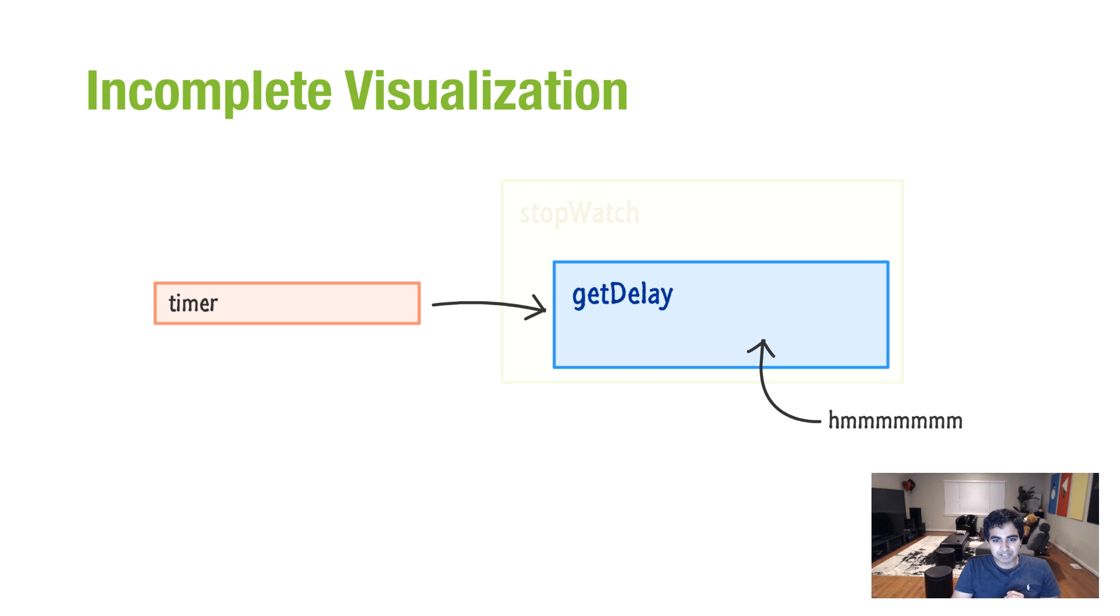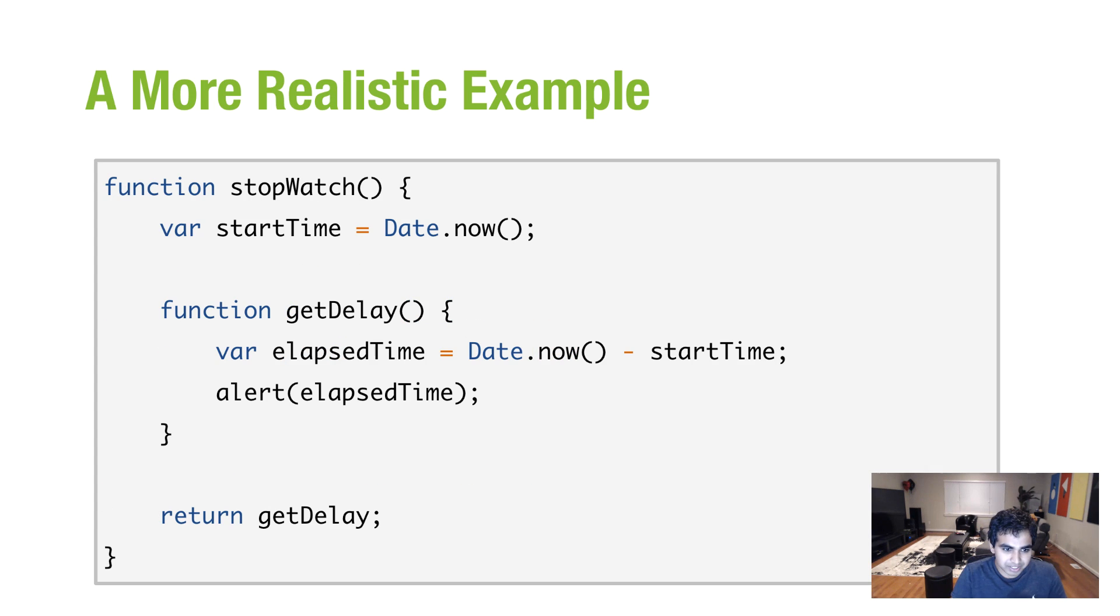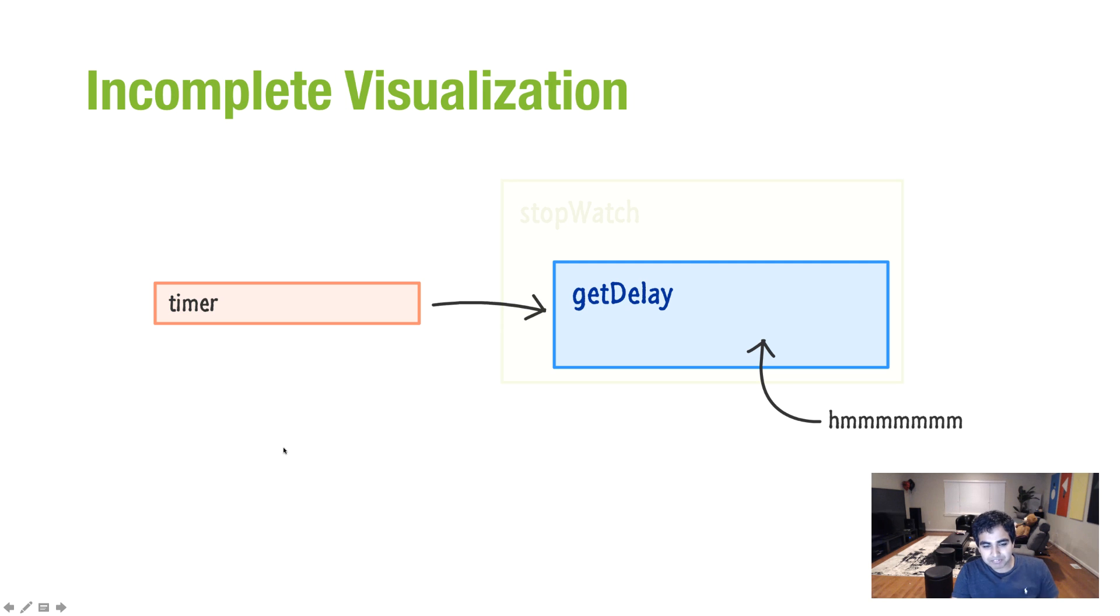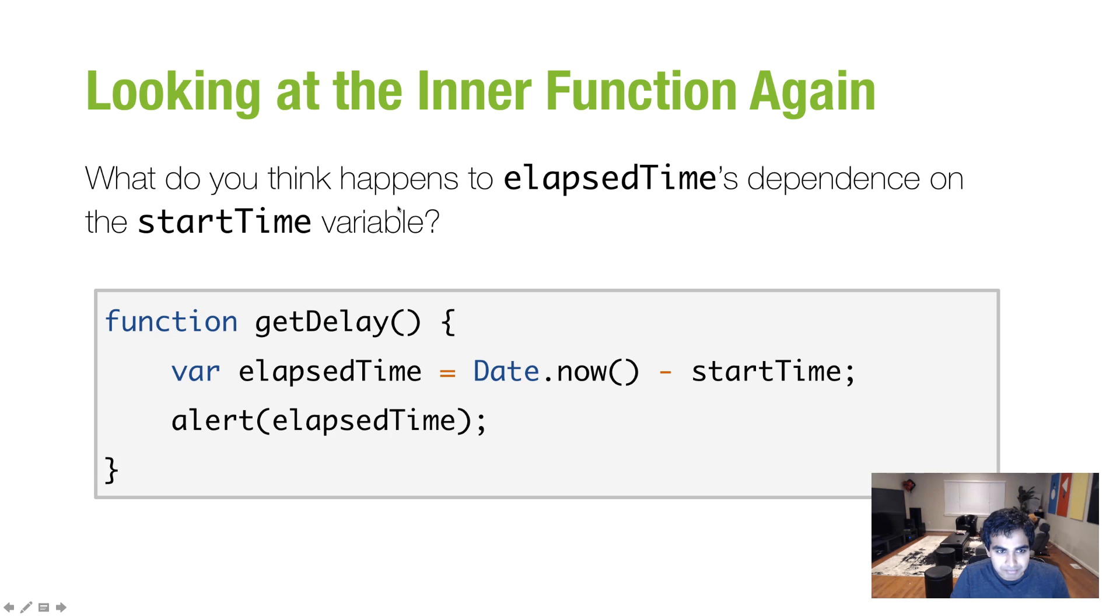That's basically what we're doing. So, now, here's what the visualization of that looks like. So, let's look at an incomplete visualization. So, if we're going to look at what's going on here, we have stopwatch initialized, the value getDelay, it gets returned. The simplified view of this would be timer, that's the variable, and there are two boxes, the outer function stopwatch, inner function getDelay. And that is a very simplified way of looking at it. But, as you can see by the title of the slide, it is also incomplete.